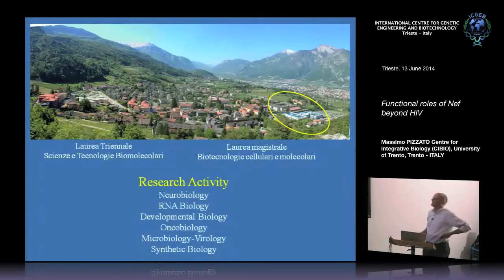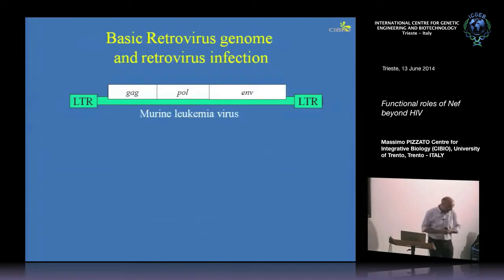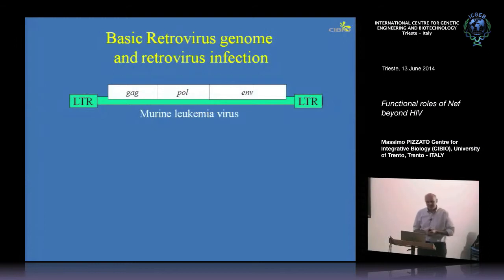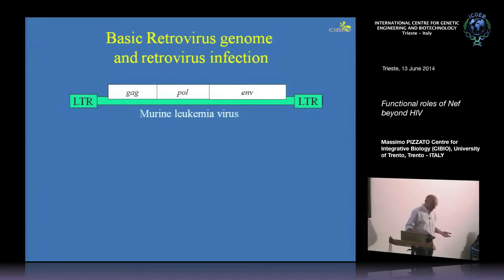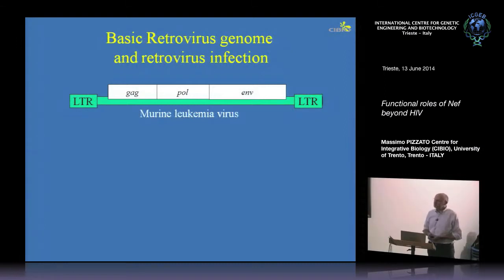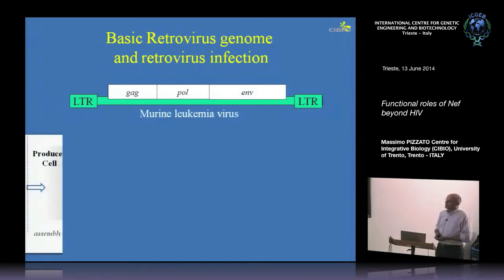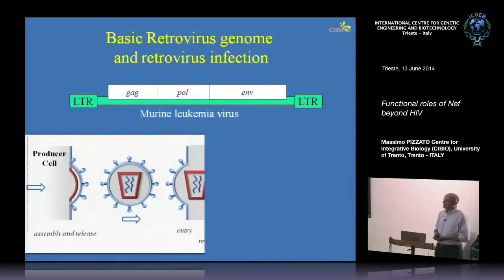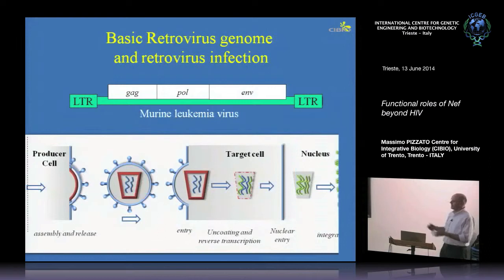Let's start talking about HIV — but not only HIV. This is the basic structure, the simplest structure of a retrovirus. You have only three genetic regions which encode for GAG, POL, and ENV. This is needed to make the structural and enzymatic activity of retroviruses, and this is what we're going to see today.